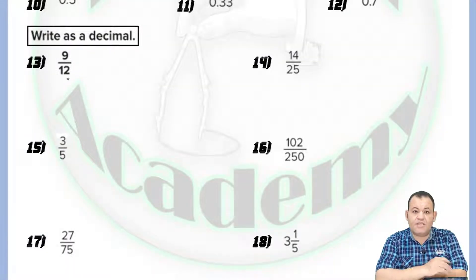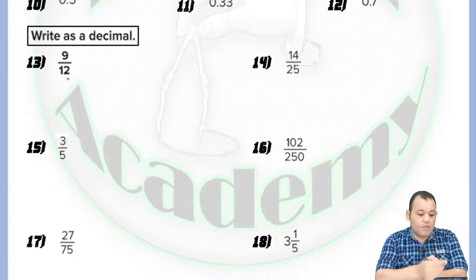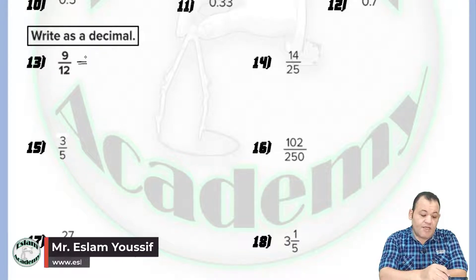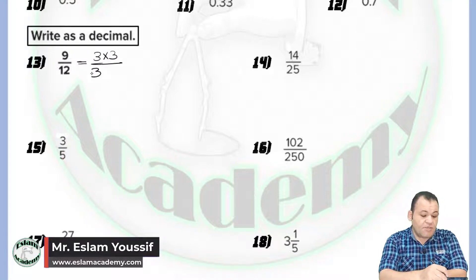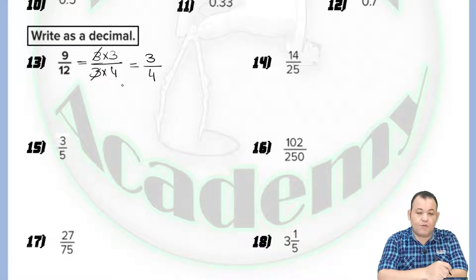Now in this problem, we need to write each of the following as a decimal. We know how to convert from decimal to fraction; now let's see how to convert from fraction to decimal. For number one, look at the fraction you have. If you can simplify — we know that nine equals three times three, and twelve equals three times four — cancel the threes. The simplest form is three over four.